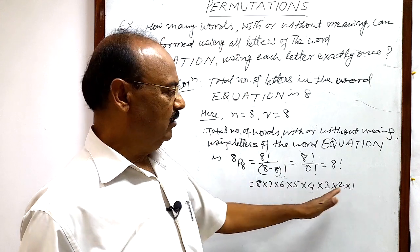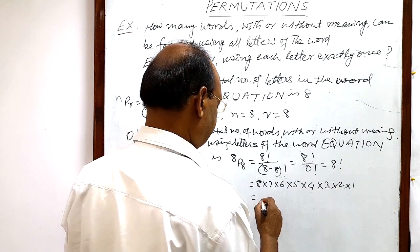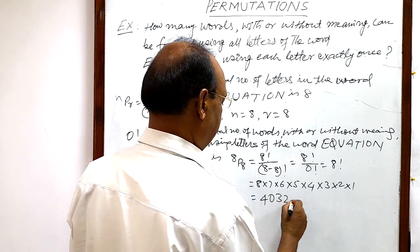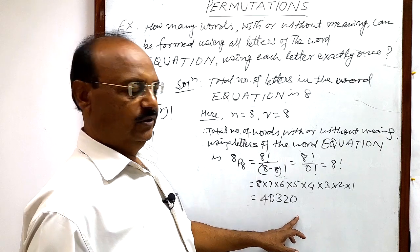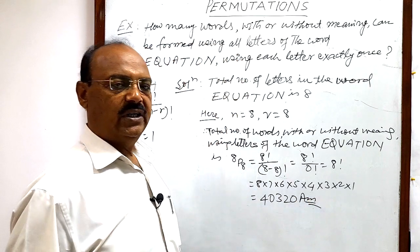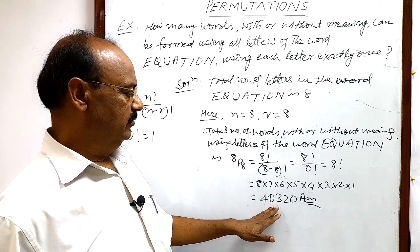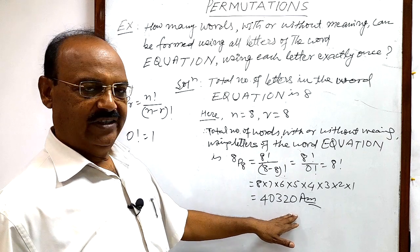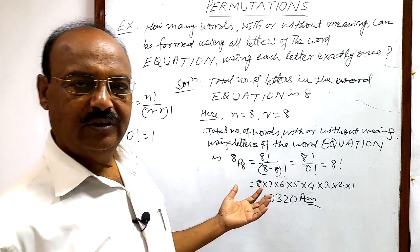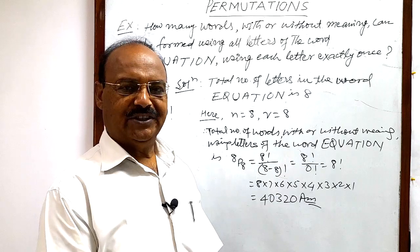After multiplying all these numbers, we get 40320. So the total number of words formed with the help of the letters of the word EQUATION, with or without meaning, is 40320. The question is very simple and interesting. We will do some more problems in other videos. Thank you very much for watching this video.